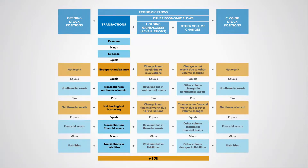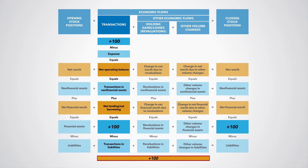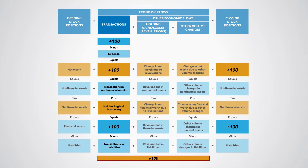because this transaction increases government's net worth through its increased holdings of cash. We thus record an amount of 100 in revenue and a counterparty entry, because we use double entry accounting, as an increase in financial assets in the form of cash. Because government is now holding cash of 100, its net worth has increased by 100. The operating balance is thus plus 100, explaining the increase in net worth. The net lending/net borrowing balance is also plus 100.